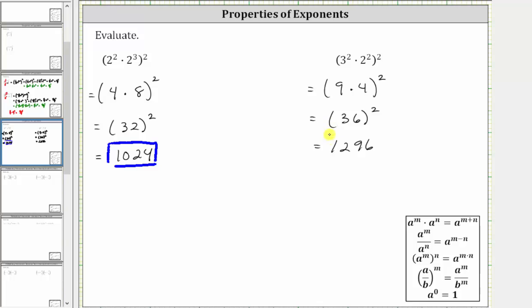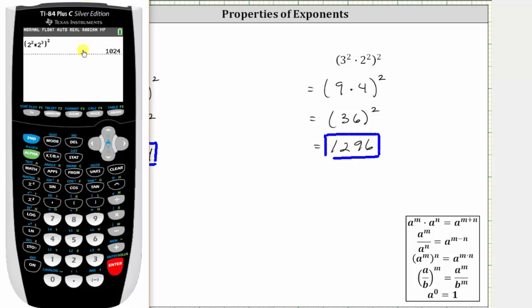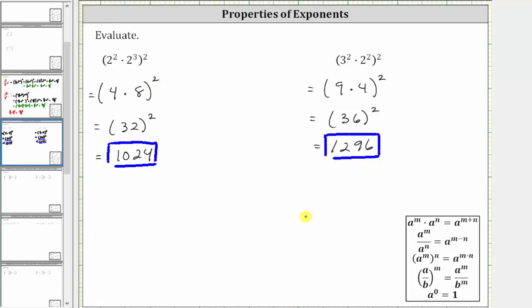Again, let's verify this on the calculator. Entering the original expression: open parenthesis, three squared times two squared, close parenthesis squared, and enter, which does give us 1296. I hope you found this helpful.